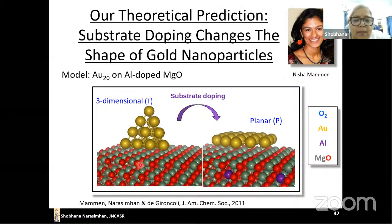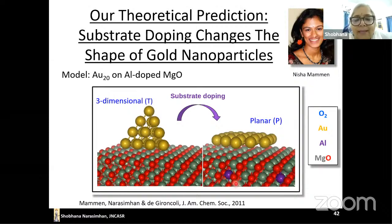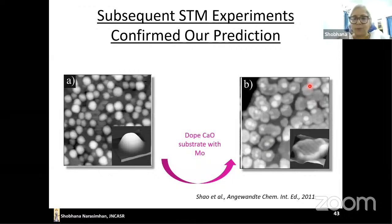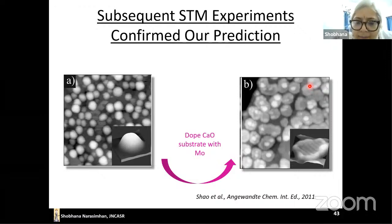The suggestion we made — with my collaborator Stefano de Gironcoli and my PhD student Nisha Mamman — was: if you dope the magnesium oxide support with an electron donor, replacing some divalent magnesium atoms with trivalent aluminum atoms, we predicted using DFT that you would get the planar shape being favored. Nisha even had custom earrings made: one earring is the planar gold nanoparticle and the other is the 3D gold nanoparticle — her birthday present from the group.